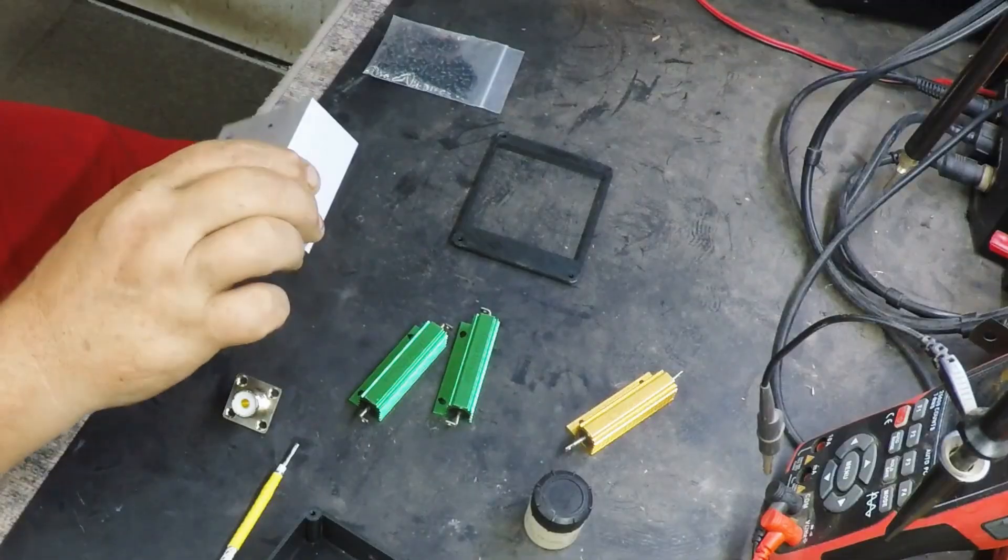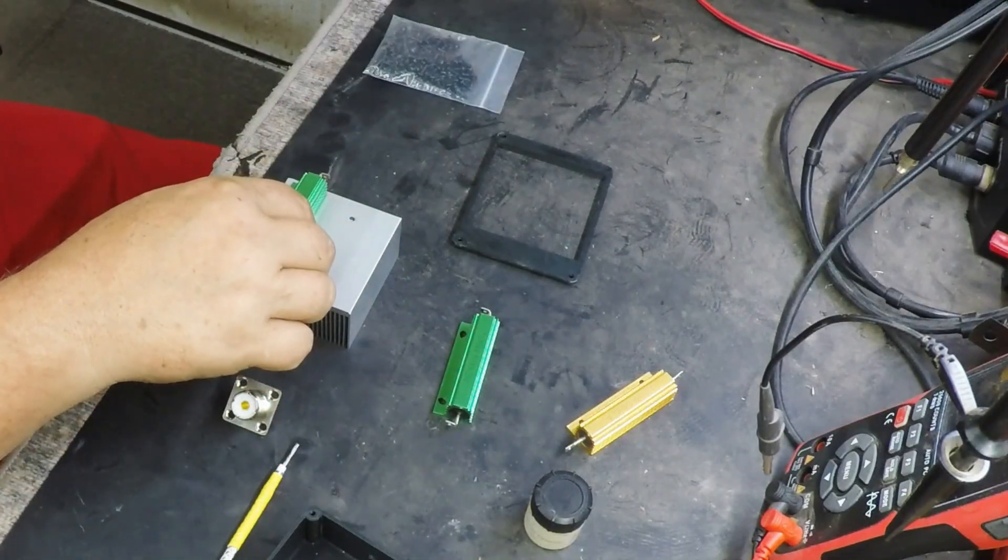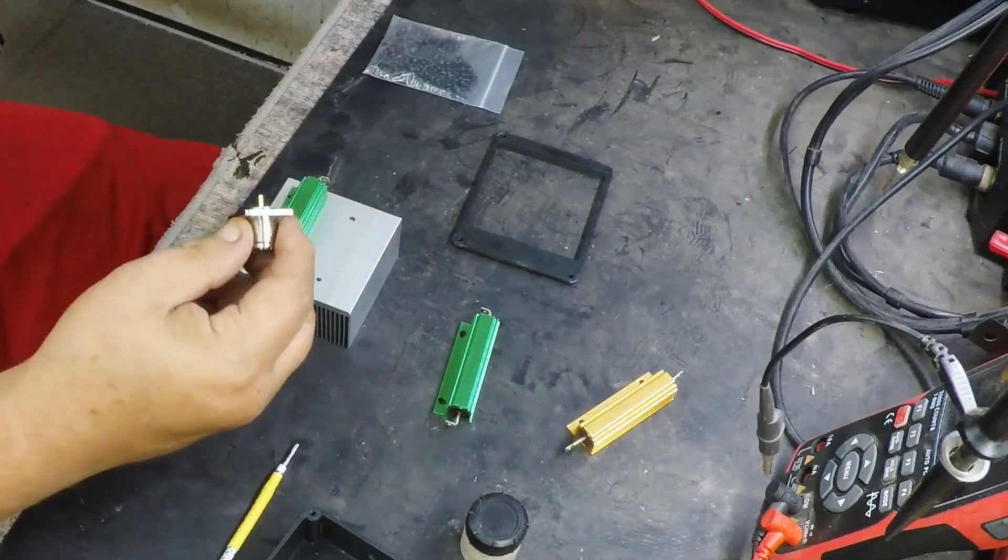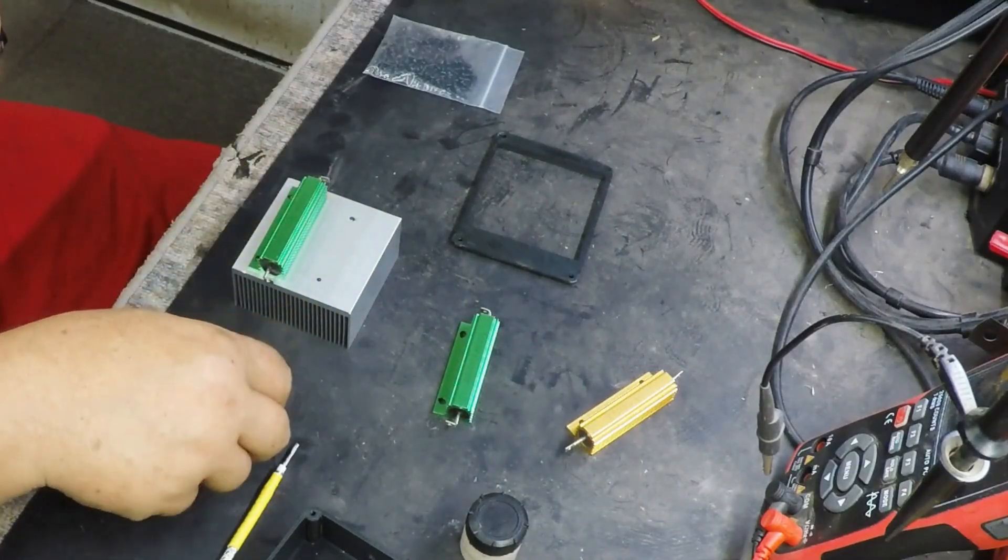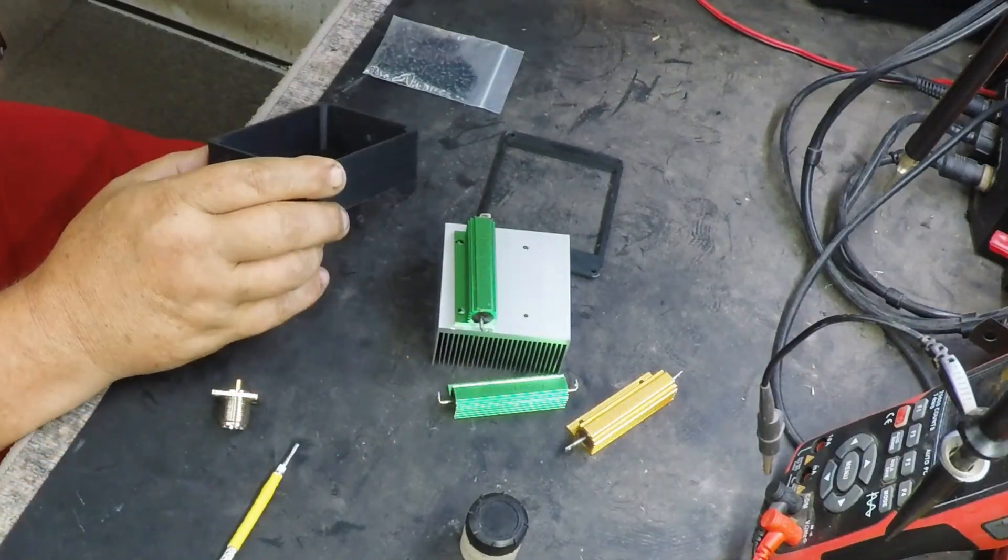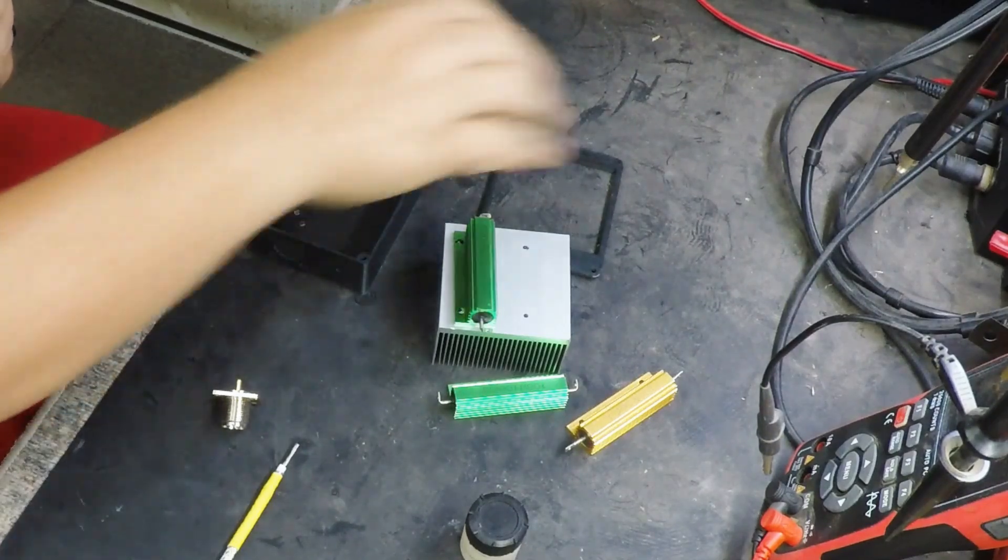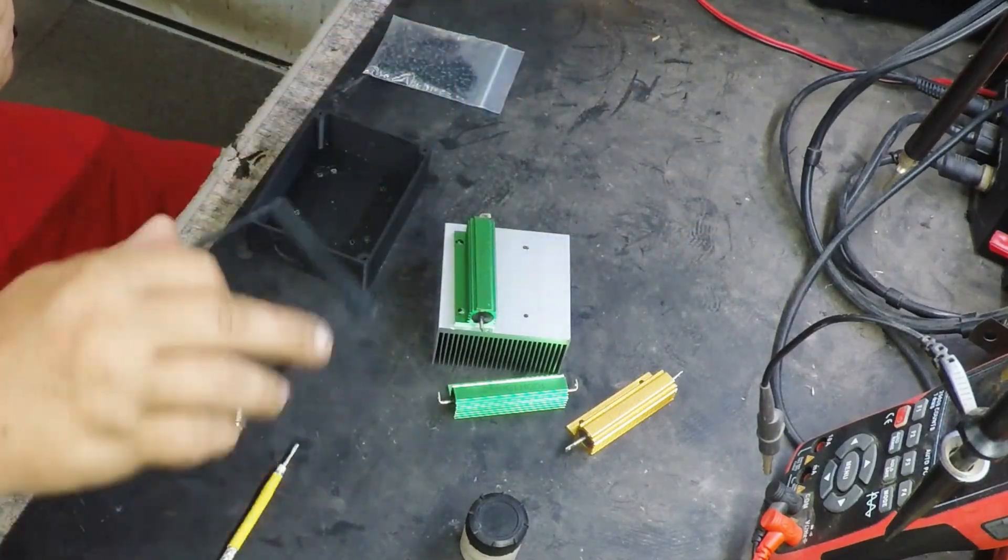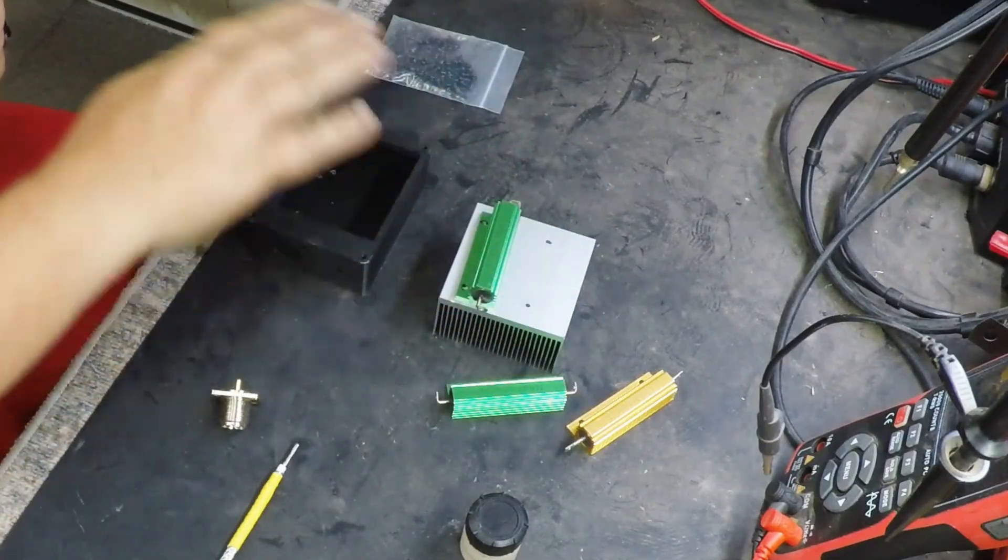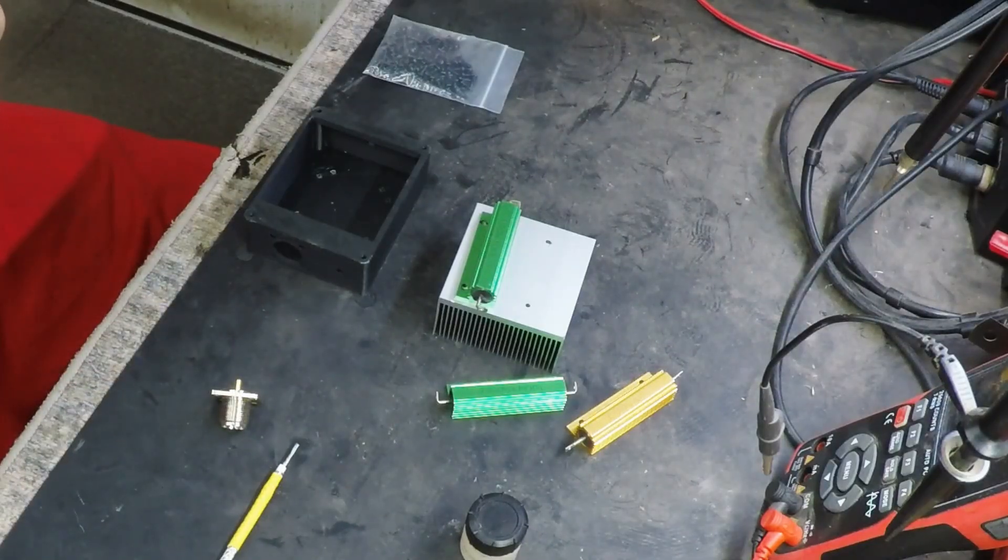I bought these two and then this heat sink, all bought from Amazon. I've already got it marked for where I'm going to drill it and put these in, and I'll put some heat sink compound on them. I got me an SO239 connector and here is the box that I decided to print out. It's a modified box I found, it's actually for a balun but I changed some dimensions on it.